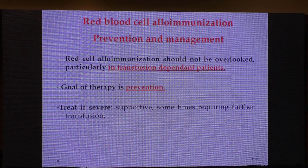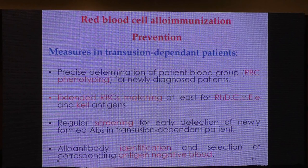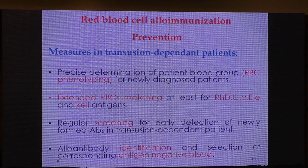Prevention is the treatment. This is something preventable — with just a little knowledge we can prevent this problem. The most important question is how to prevent alloimmunization in a patient who will live their whole life on blood transfusions. The first step is precise determination of the patient's blood group for newly diagnosed patients — with 100% emphasis on newly diagnosed patients.